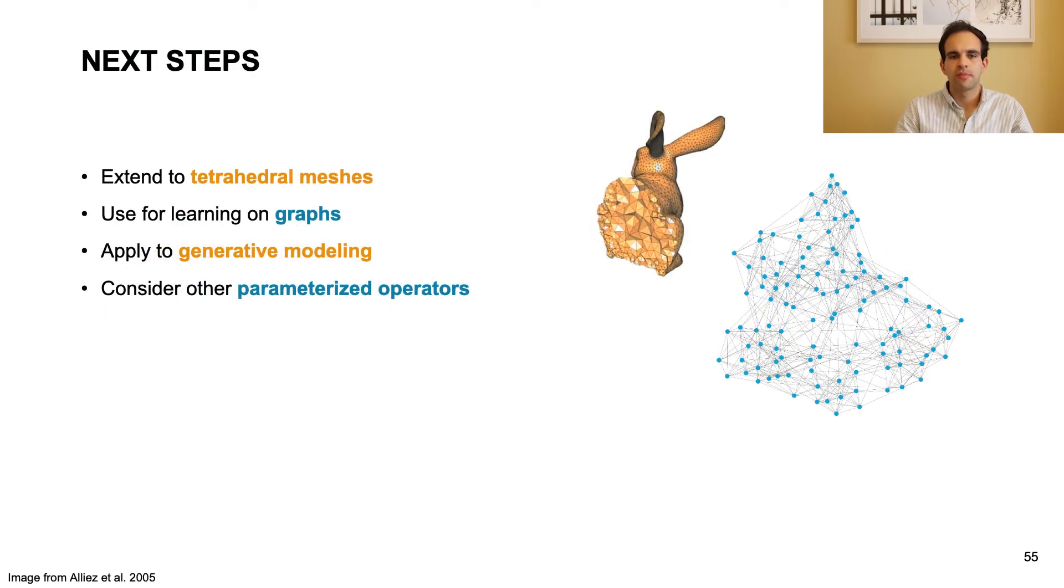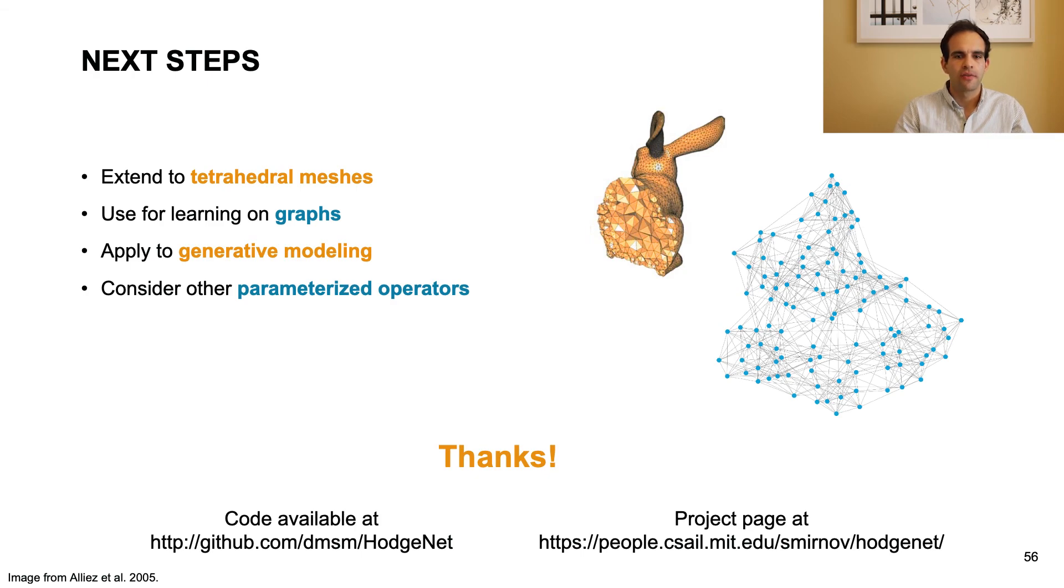In conclusion, we have proposed a deep learning on meshes methodology that takes advantage of decades of spectral geometry processing research without compromise. Our learnable functions act only on local neighborhoods, and yet have a global receptive field, thanks to the eigendecomposition. This work suggests many exciting avenues for future research. The most obvious next step is to extend our model to tetrahedral meshes for volumetric problems. We could also apply our method to general graphs with just a mild reparametrization, facilitating applications in network analysis and other standard graph learning problems. Additionally, we could consider applications of learning meshes for generative modeling. Finally, we could use other operators similarly parametrized using discrete exterior calculus. Thank you for your attention, and please check out our code, publicly available on GitHub.